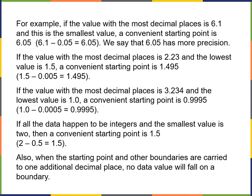If the value with the most decimal places is 3.234 and the lowest value is 1, a convenient starting point is 0.9995 — three nines and a five. That's 1 minus 0.0005, and so on. Depending on where the most decimal places are, just add another zero after the decimal point.